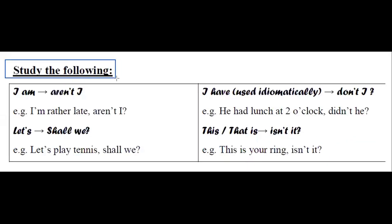Study the following exceptions. 'I am' becomes 'aren't I' — for example, 'I'm rather late, aren't I?' If the word 'have' is used grammatically, it becomes 'don't' — for example, 'He had lunch at 2 o'clock, didn't he?'